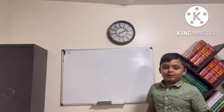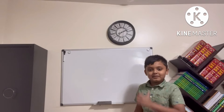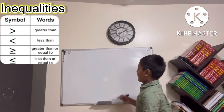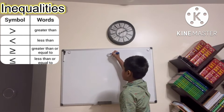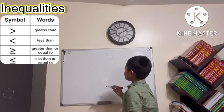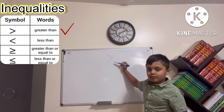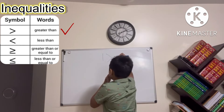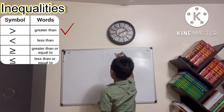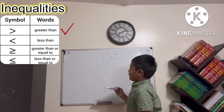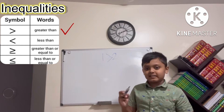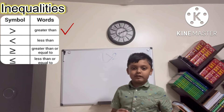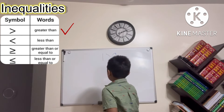Hello guys, today we're learning about something called inequalities. Inequalities have four symbols. One is the greater than symbol. The greater than symbol — for example, one is less than two, but if we flip it and say one is greater than two, that would be false.